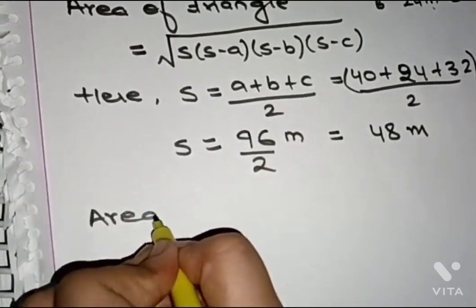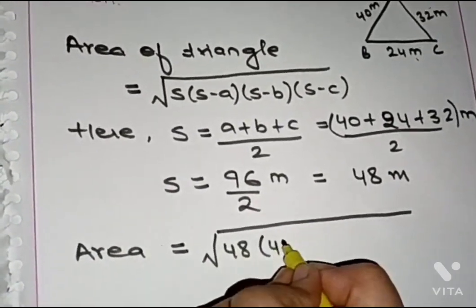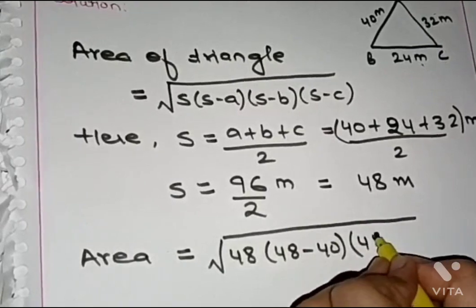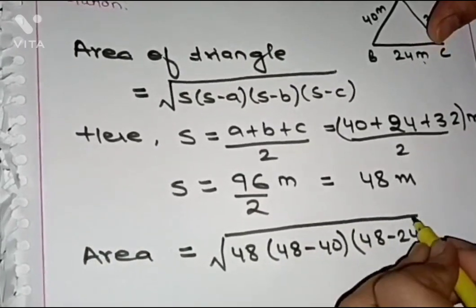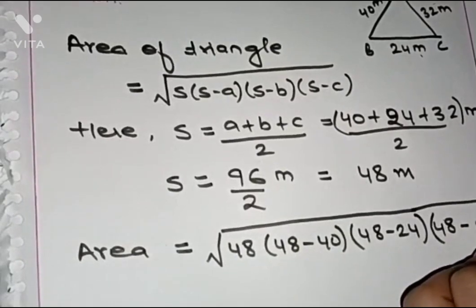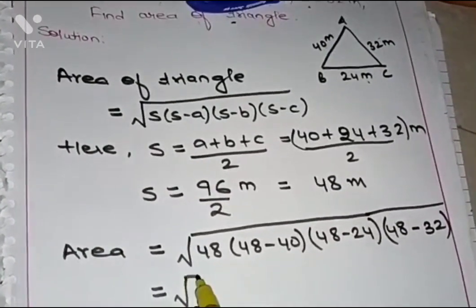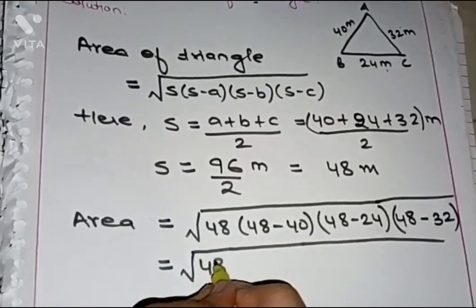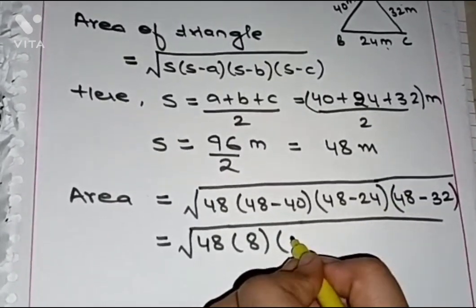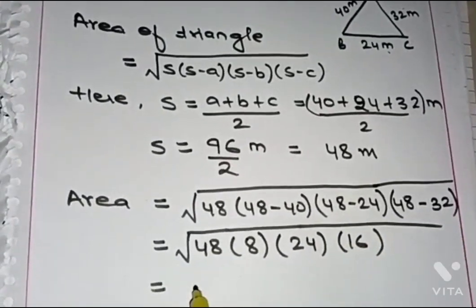Now we apply Heron's formula: Area = √(48 × (48−40) × (48−24) × (48−32)) = √(48 × 8 × 24 × 16). Calculating: 48 × 8 = 384 and 24 × 16 = 384, so this becomes √(384 × 384).